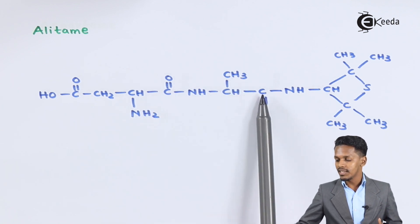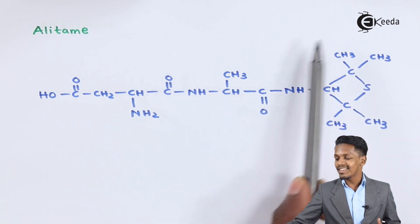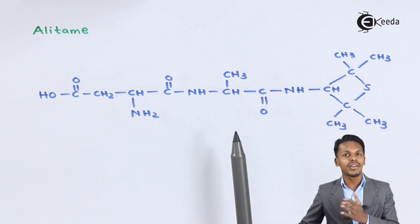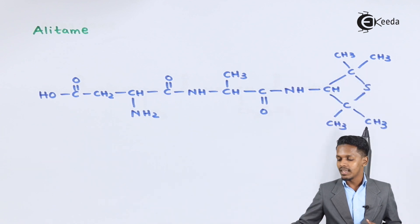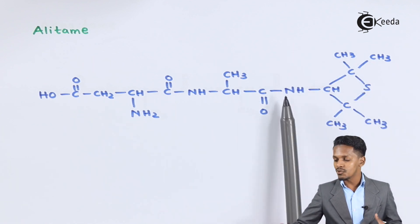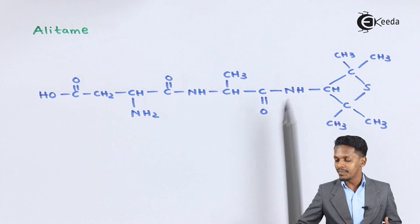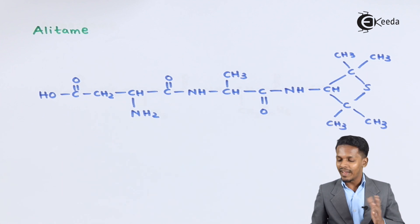And this is CHCH3, C double bond O NH, while this is the portion which is comparatively different from aspartame. Here basically this is a group, so this is the group that is being associated to this nitrogen atom over here. This is the structure of alitame.